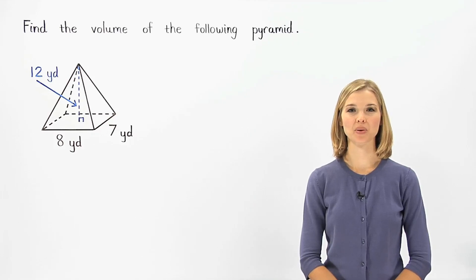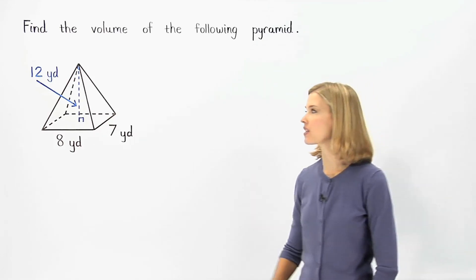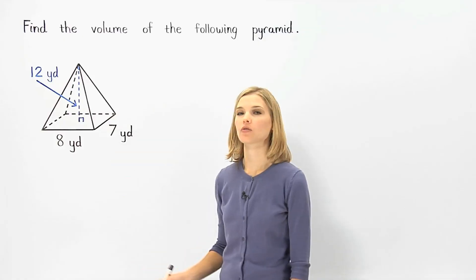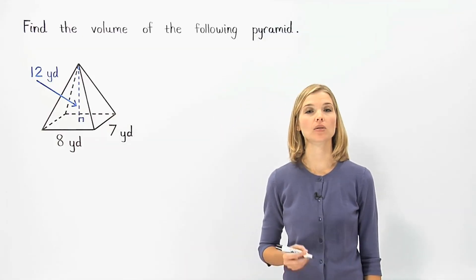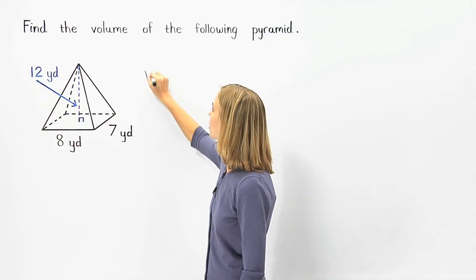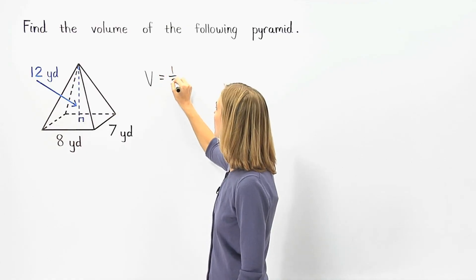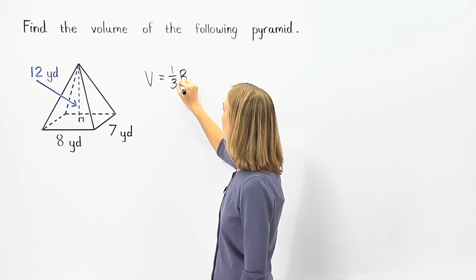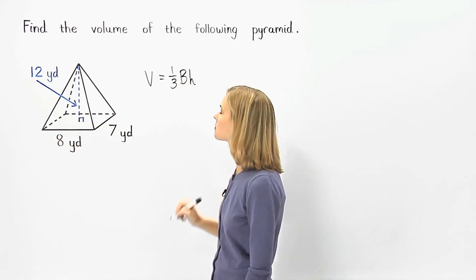In this example, we're asked to find the volume of the given pyramid. To find the volume of a pyramid, we use the formula: volume equals one-third times the area of the base times the height.